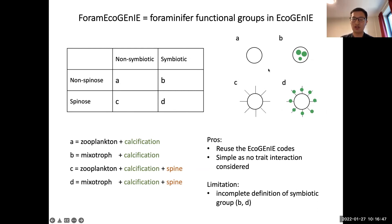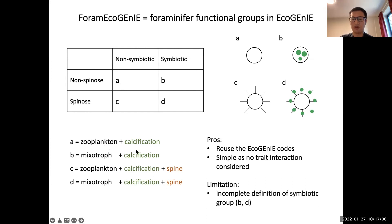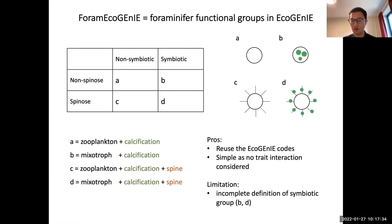Let me show a picture illustrating how these functional groups look. For group A, which has just a test, we model this by adding a calcification term to the existing zooplankton functional group in EcoGenie. For the symbiotic group, we have some symbionts and change the zooplankton to a mixotroph, which is already built into EcoGenie. For spined foraminifera, we add some spines to the existing A and B groups. This is quite easy to develop using existing EcoGenie codes. It's also simple because we don't assume any trait interactions — for example, spined foraminifera should change their feeding behavior but we don't model that. This is one of our limitations.